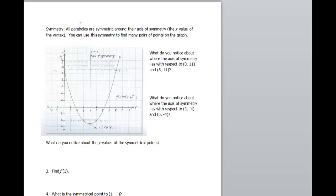Symmetry. So we've been talking a little bit about that. But I wanna go into a little bit more detail here. It says all parabolas are symmetric around their axis of symmetry. So remember again, that's the x value of your vertex. You can use the symmetry to find many pairs of points on the graph. So I took a picture out of the book. What do you notice about where the axis of symmetry lies with respect to the points 0, 11 and 8, 11? So if you were to count these spaces, this is 1, 2, 3, 4 to get to my axis of symmetry. And then if I go in the other direction, it's gonna count 1, 2, 3, 4. So what do you notice? That axis of symmetry is right in the middle. It's right in half, it cuts the parabola in half.